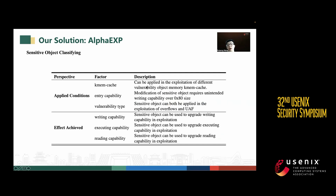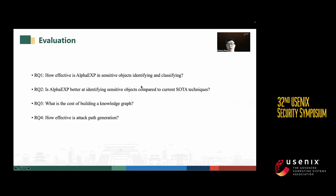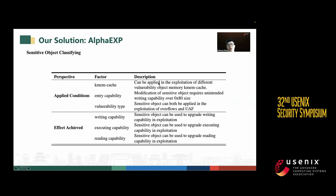Finally, we want to classify all of the sensitive objects we found. We built a dataset of vulnerabilities and evaluated the objects from two perspectives. The first is applicability conditions, including requirements of heap memory layout, capability, and vulnerability type. The second is effects achieved, including writing capability, executing capability, and reading capability.